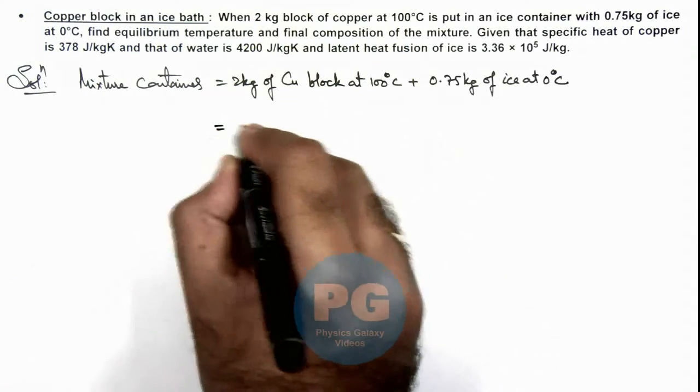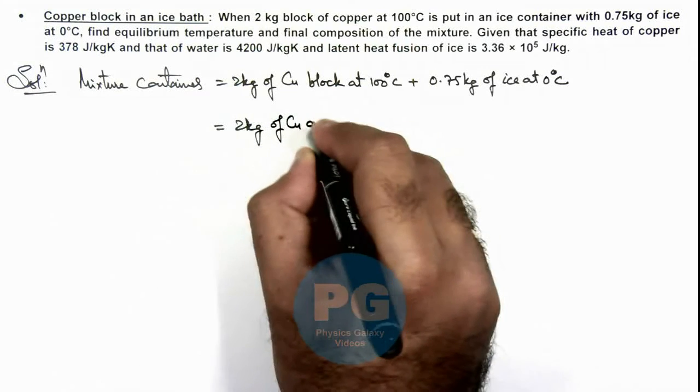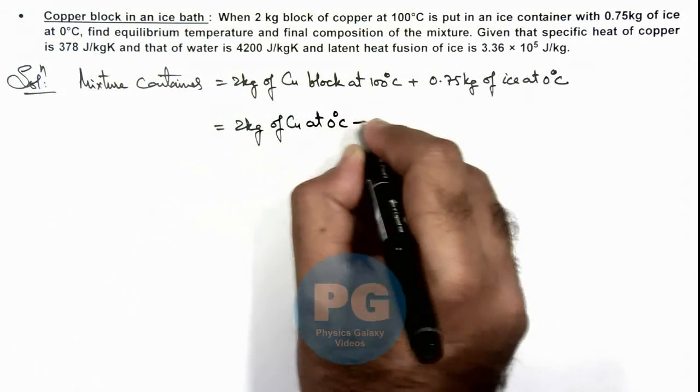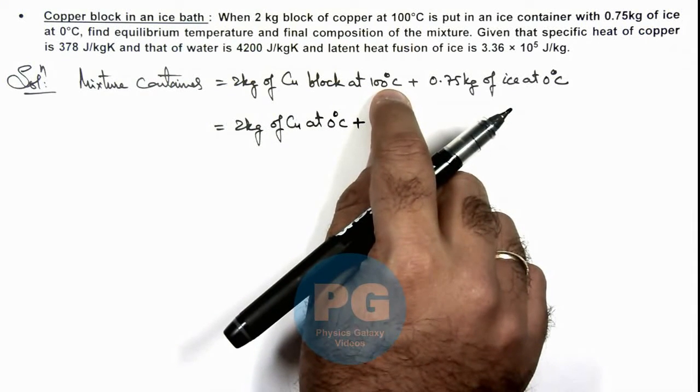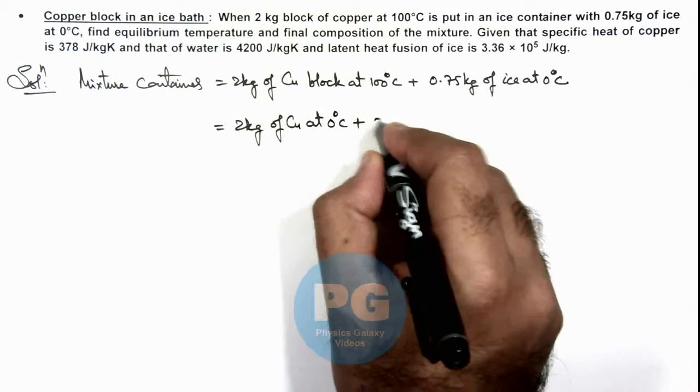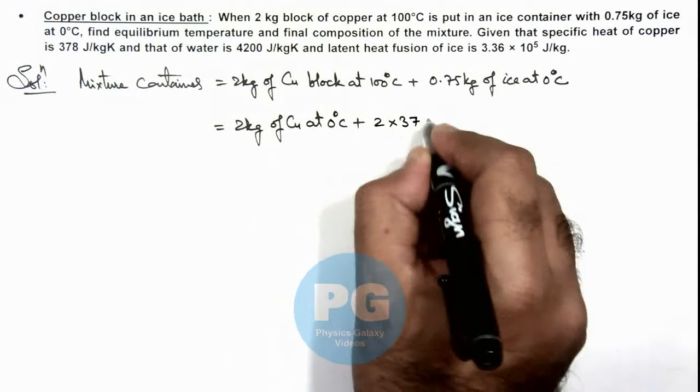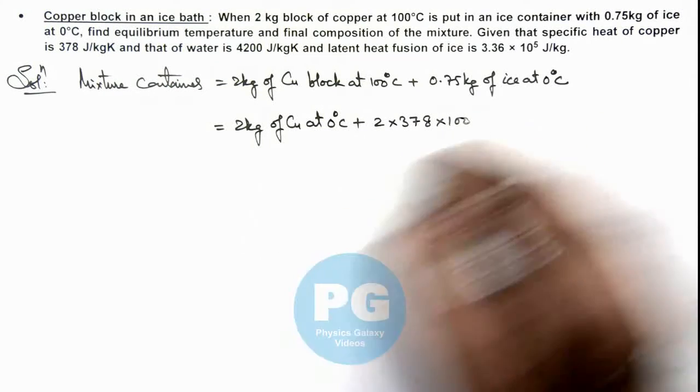So this can be written as 2 kg of copper at 0°C plus we write the amount of heat it releases when it comes down from 100 to 0, which we can write as m·s·ΔT which is 2 × 378 × 100 in joules.